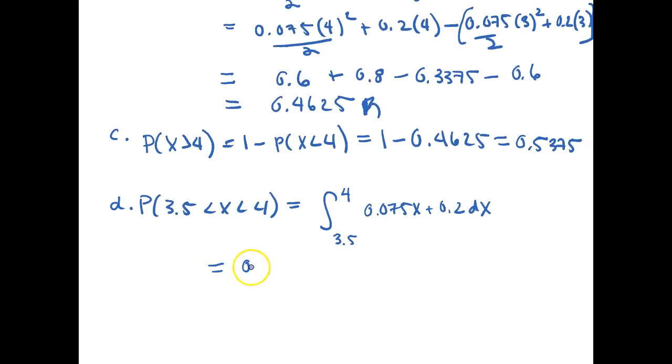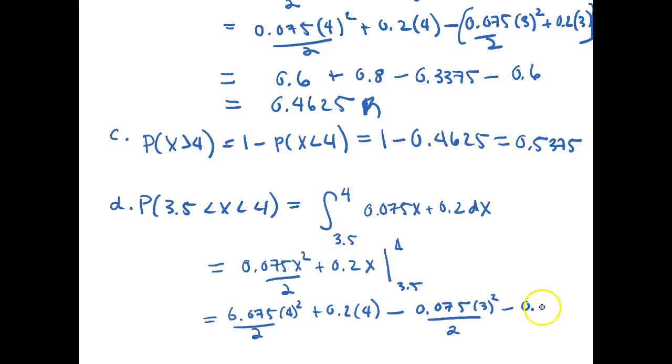This is then equal to 0.075x squared over 2 plus 0.2x from 3.5 up to 4. If we evaluate the expression at our bounds, then we get 0.075, 4 squared all over 2 plus 0.2 times 4 minus 0.075, 3 squared over 2 minus 0.2 times 3. Or excuse me,